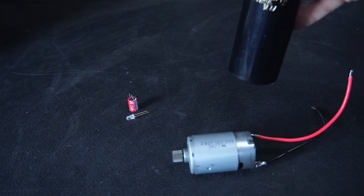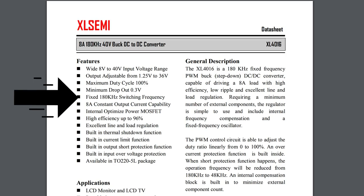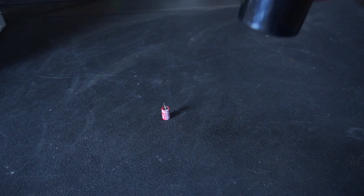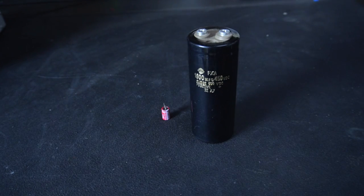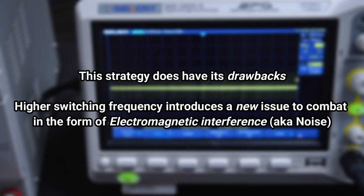And since that is impractical and also expensive, manufacturers designed buck ICs to utilize high switching frequencies typically in the 100-200kHz range, which in turn reduces the size of smoothing capacitors down to a more manageable level. However this strategy does have its drawbacks.